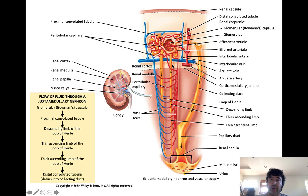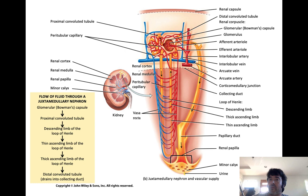Within the renal cortex and renal medulla, we have these microscopic structures called nephrons. Nephrons are the most important structures in the kidneys. If you were to look at them microscopically, the kidneys are just bundles of nephrons — anywhere from 800,000 to 1.5 million, depending on the size of the kidney. These nephrons are where most of the functionality of the kidneys derives from; they are the workers.